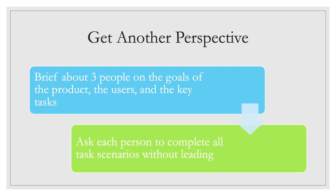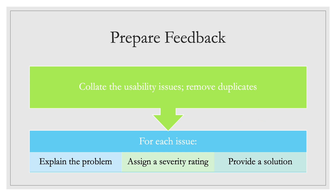Step four is getting another perspective. This is important because just looking at a page yourself, you may miss things. Having other people look at the site can help you identify issues you may not have caught. You'll brief about three people on the goals of the product, the users, and the key tasks. Then you'll ask each person to complete all tasks and scenarios without leading — you're not going to lead it like a usability test; you'll just let them work through it and get their feedback.